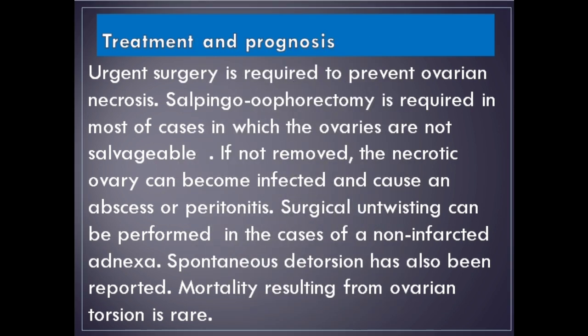Treatment and prognosis. Urgent surgery is required to prevent ovarian necrosis. Salpingo-oophorectomy is required in most cases where the ovaries are not salvageable. If not removed, the necrotic ovary can become infected and cause an abscess or peritonitis. Surgical untwisting can be performed in cases of non-infarcted adnexa. Spontaneous detorsion has also been reported. Mortality resulting from ovarian torsion is rare.